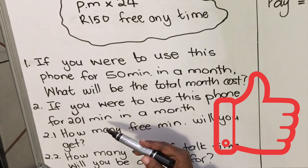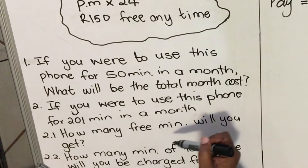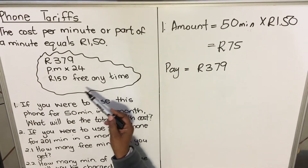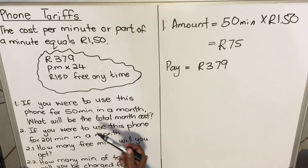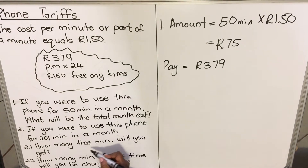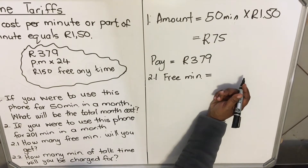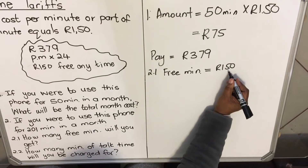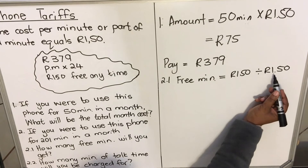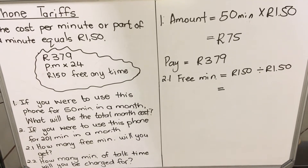The second question asks: if you were to use this phone for 201 minutes in a month, first, how many free minutes will you get? They are giving you 150 free anytime, so we must convert this money to minutes. Each minute costs 150, so you divide 150 by 150 — this is the cost for one minute. So 150 rands divided by 150 gives you how many minutes you get for free.